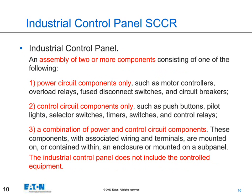An industrial control panel is a general term that identifies an assembly with two or more components in a box. Those components might be power circuit components, control components, or more likely a combination of both power and control. It's important to note that an industrial control panel does not include the controlled equipment — if it did, it would then be considered industrial machinery.